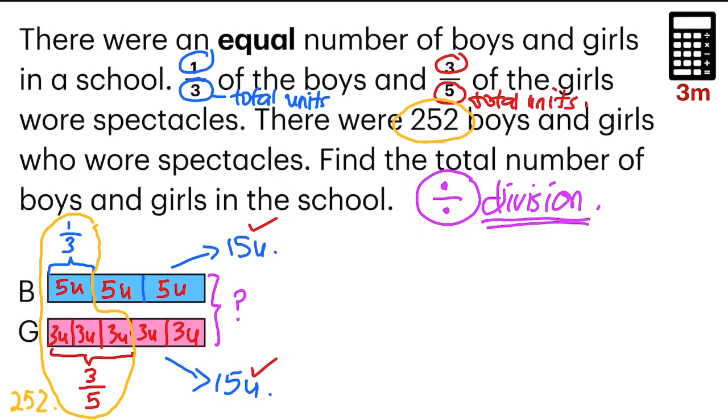Now let's check out how many units of girls wear spectacles. 3, 6, 9. As for boys, 5 units. So now we can add it up. 5 plus 9, which is equal to 14. 14 units wore spectacles.